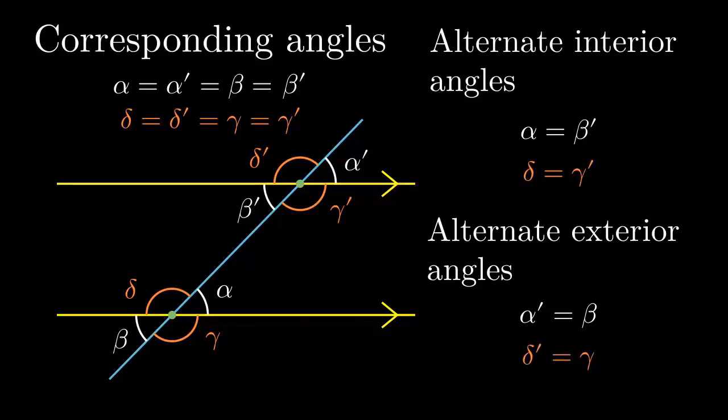If corresponding angles have the same measure, the lines must be parallel. I think it's not intuitive that parallel lines which corresponding angles don't have the same measure.